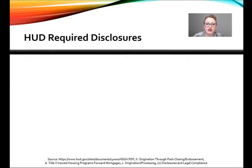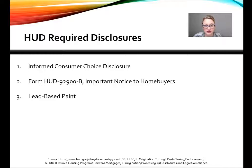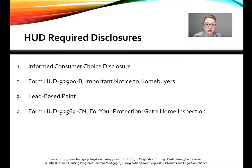So let's take a look at the HUD required disclosures. Now these are not all of the FHA disclosures required, just the HUD ones. The ones we're going to take a look at are the informed consumer choice disclosure, the important notice to home buyers, the lead-based paint disclosure, and the for-your-protection get-a-home-inspection disclosure.